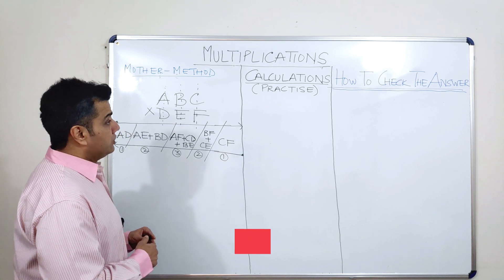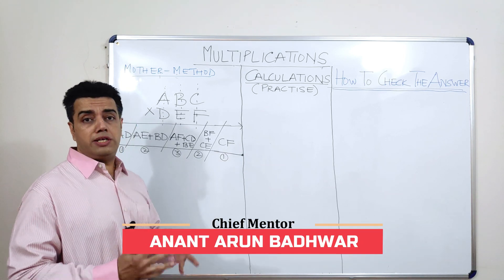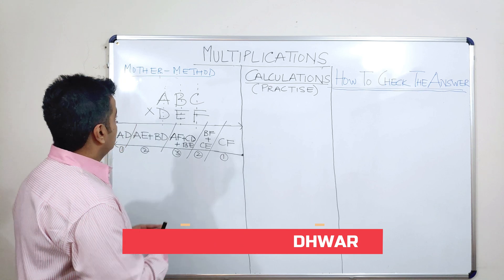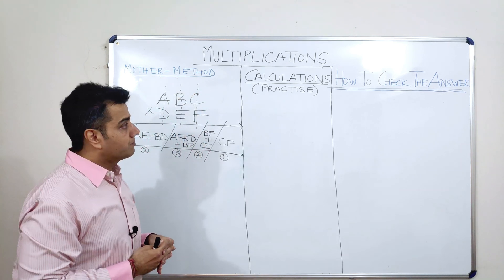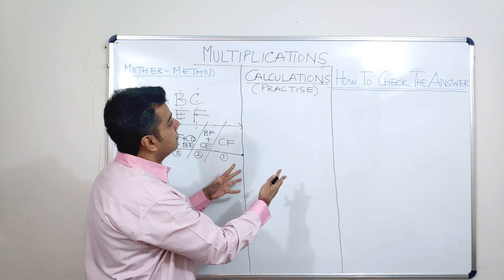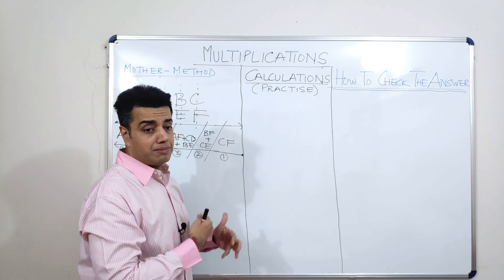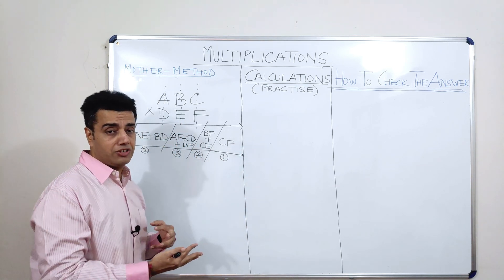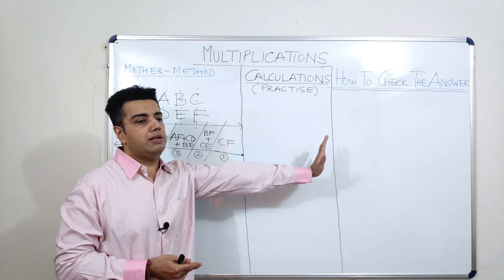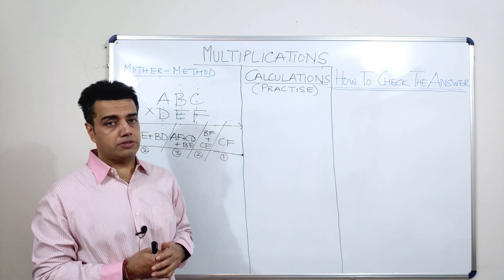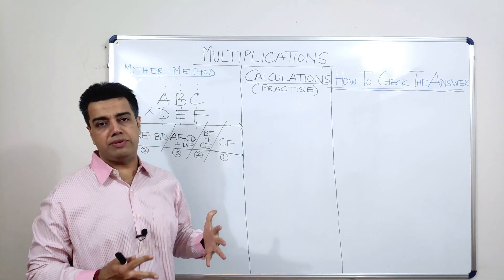So, we shall be dividing this session broadly into 3 parts. In the first part, we will be focusing on the mother method of 3 digit multiplications. In the second part, we will be practicing some applications of 3 digit multiplications along with the practice. And in the third part, we will be talking about how to check the answers of the examples that we would have taken.